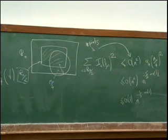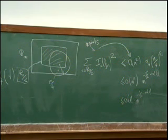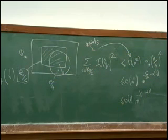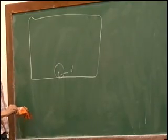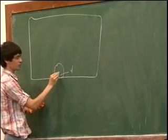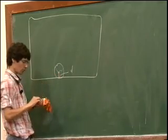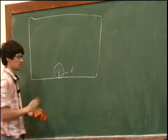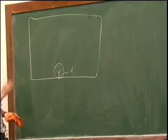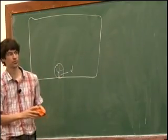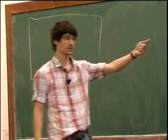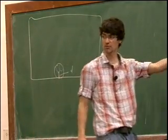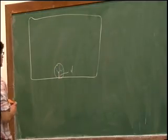What remains is to understand the boundary effect on the influences. If you look at variables close to the boundary, the four-arm picture degenerates. For example, if you are near the boundary and the distance to it is small, to be pivotal you still need a four-arm event, but possibly with colors reversed — and this alone doesn't give an efficient upper bound on your influences. We need to describe more carefully what's going on.